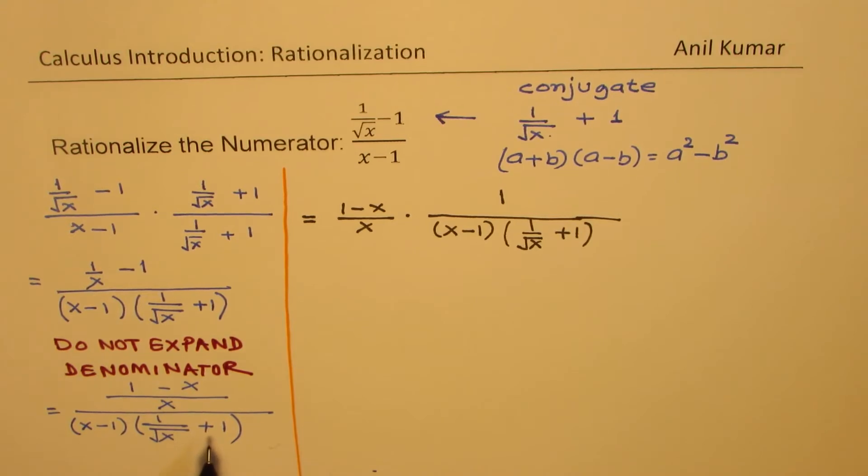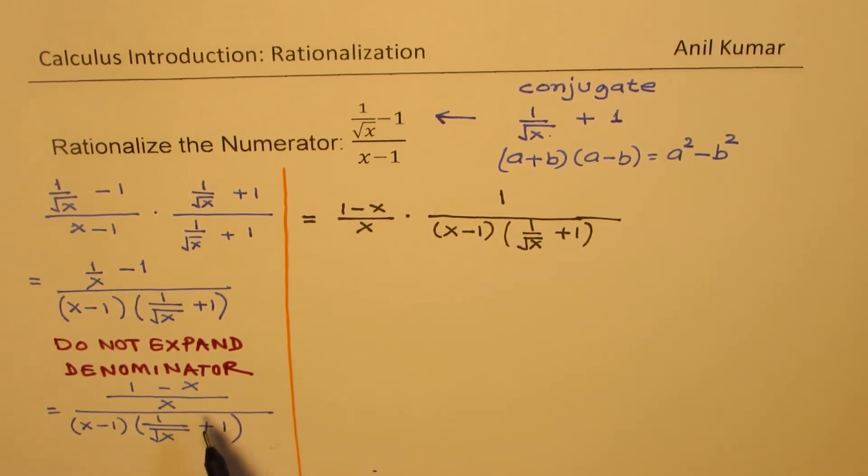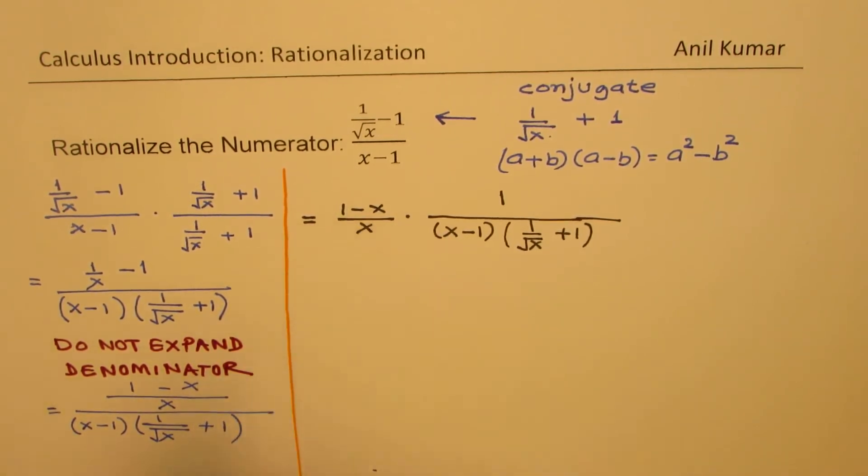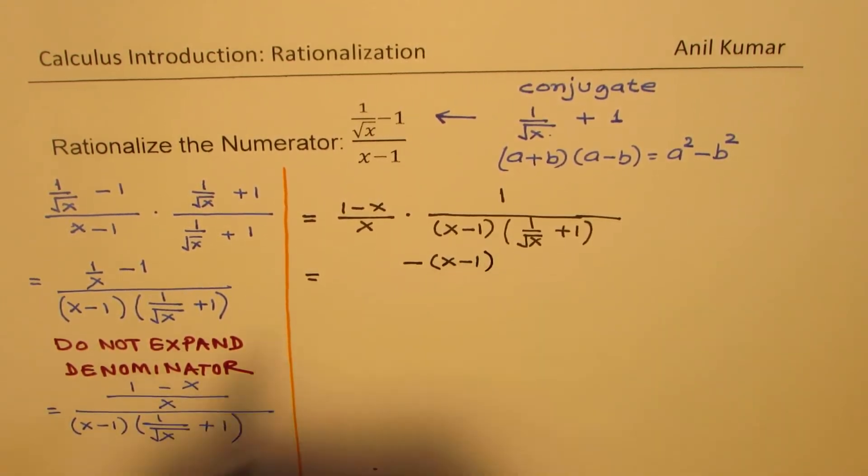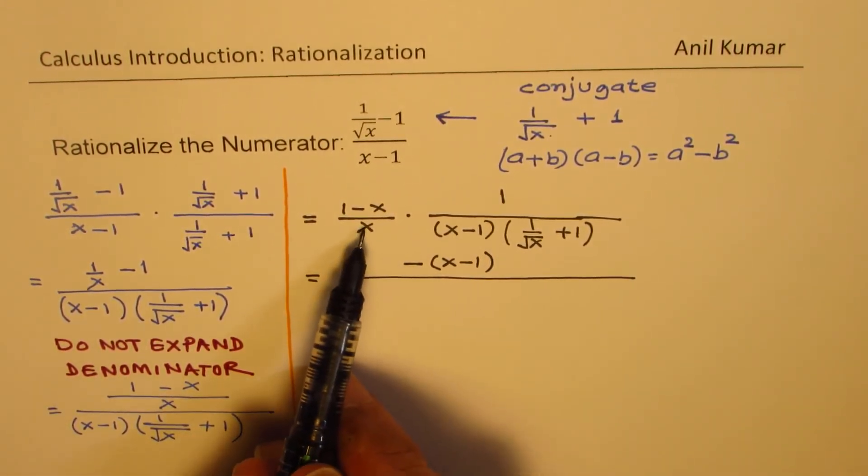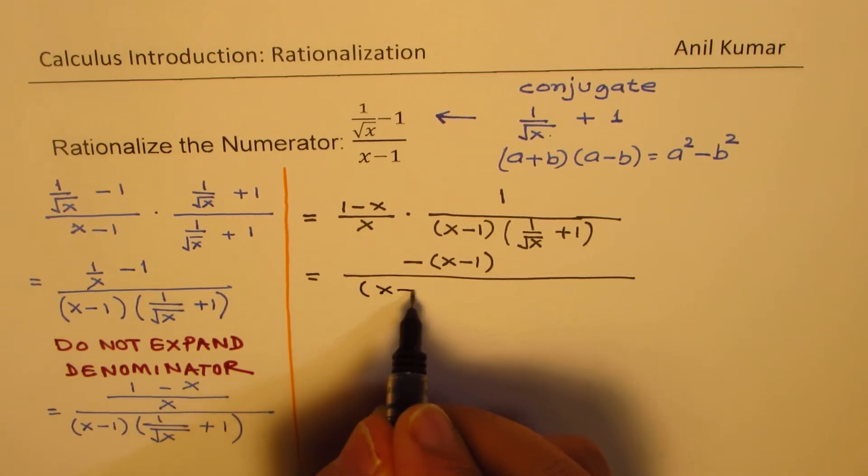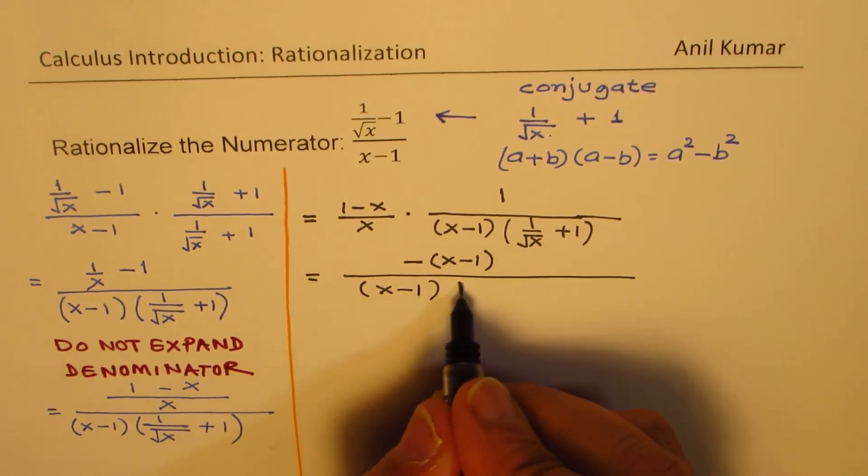It may become very cumbersome at times. So simplify your expressions as you move along. Now here, we have x minus 1 in the denominator. 1 minus x in the numerator is a good idea to write this as negative of x minus 1. So that becomes our next step. And in the denominator, we have all these terms. We should multiply this x with the brackets inside to simplify. So we have here x minus 1 as one of these terms, and then we are going to multiply with x these terms.